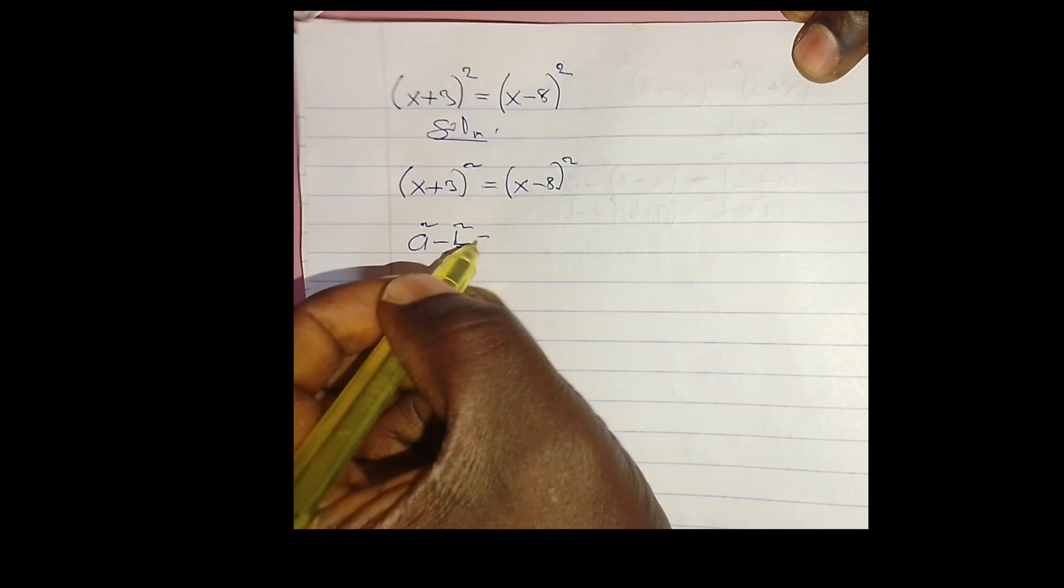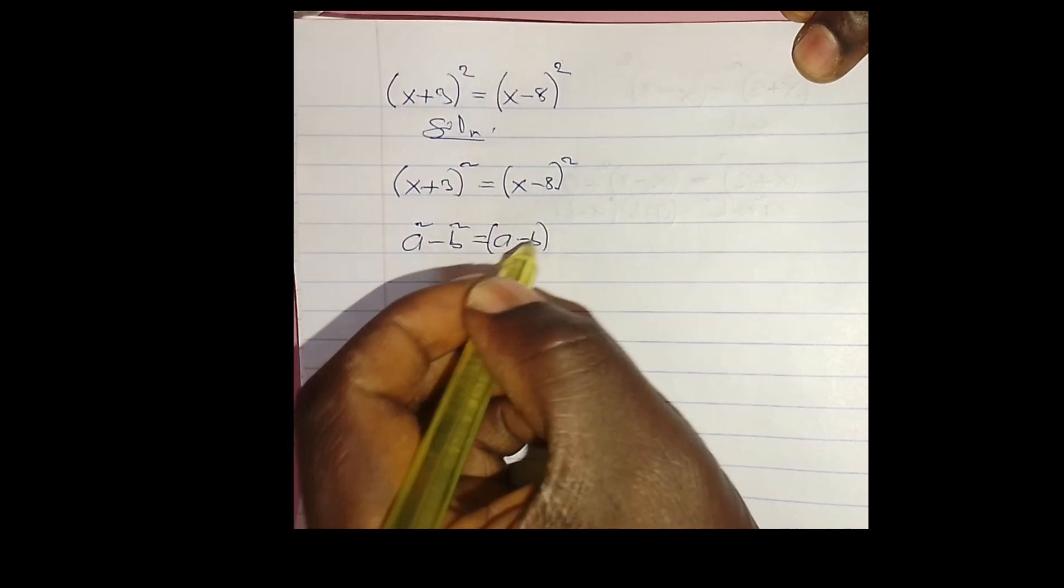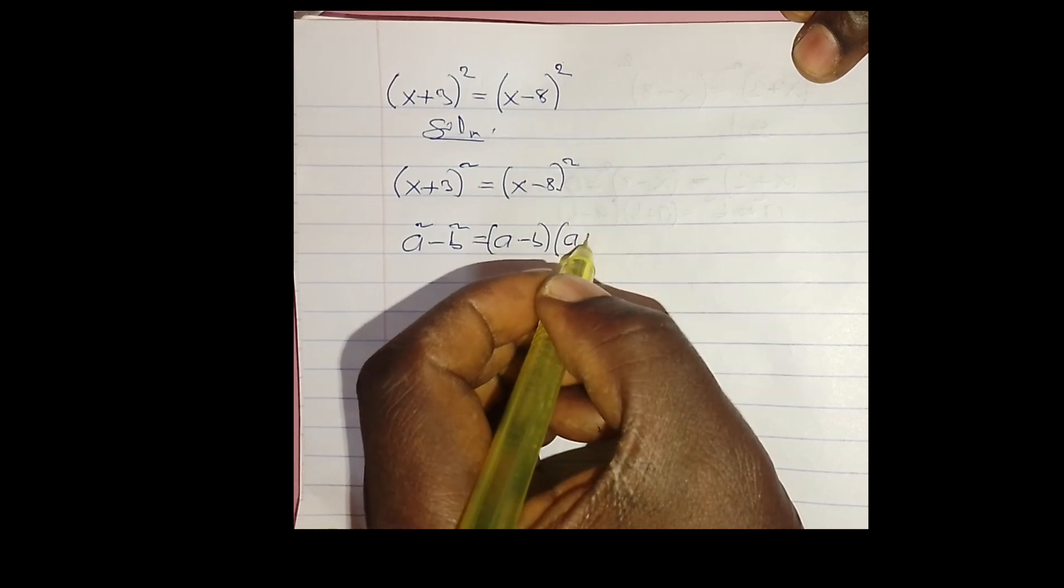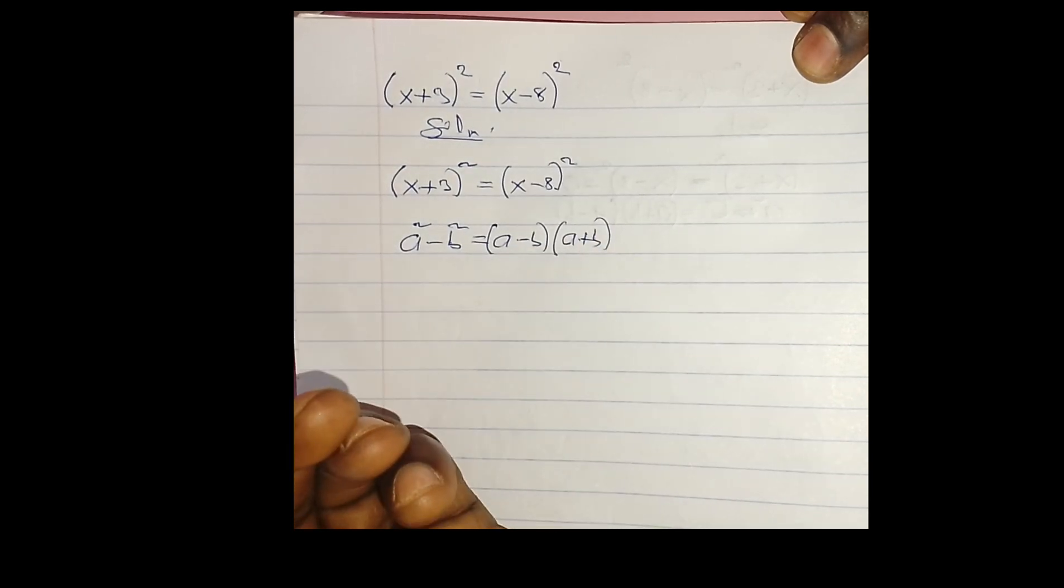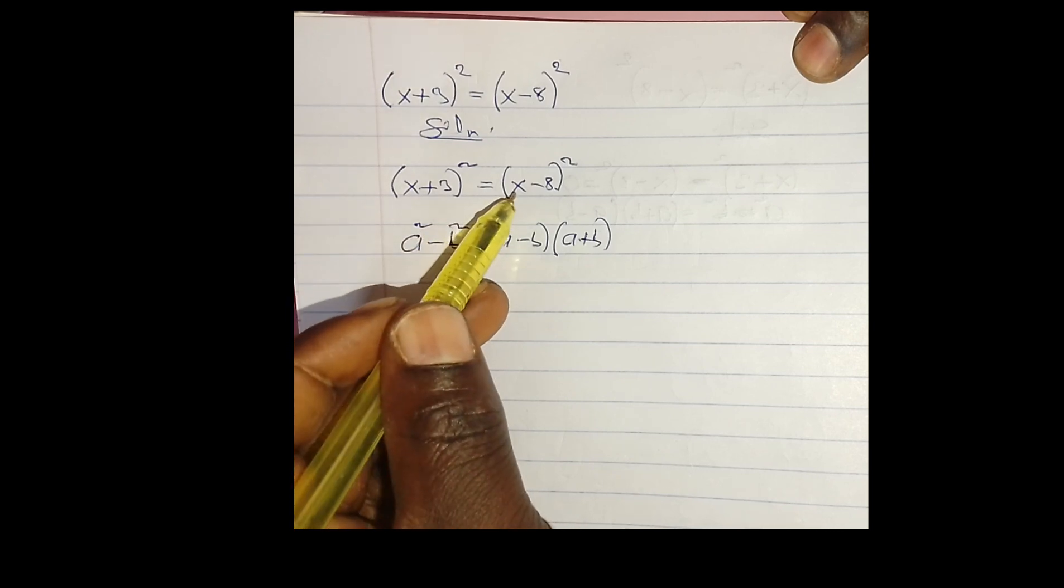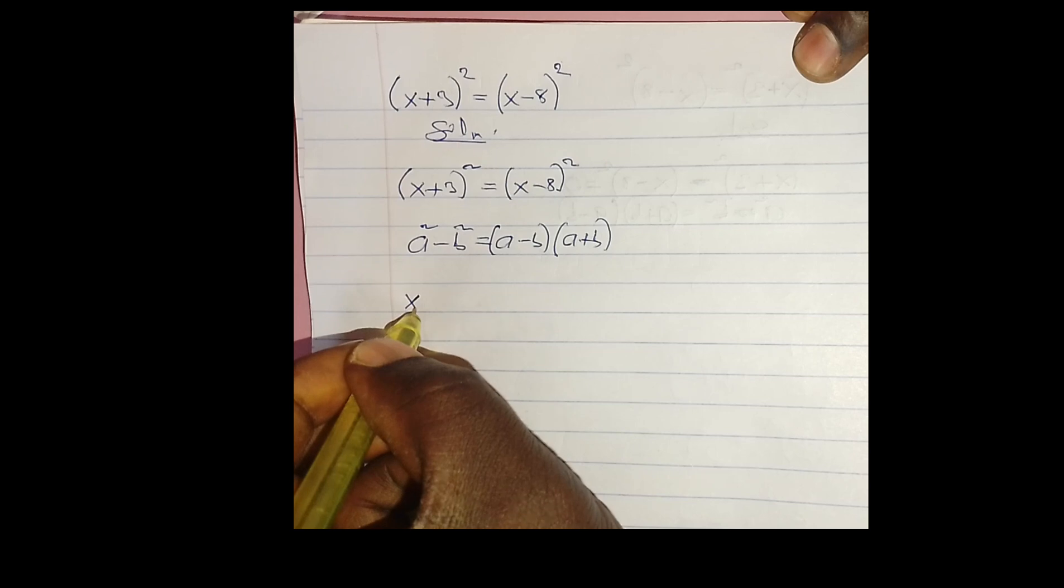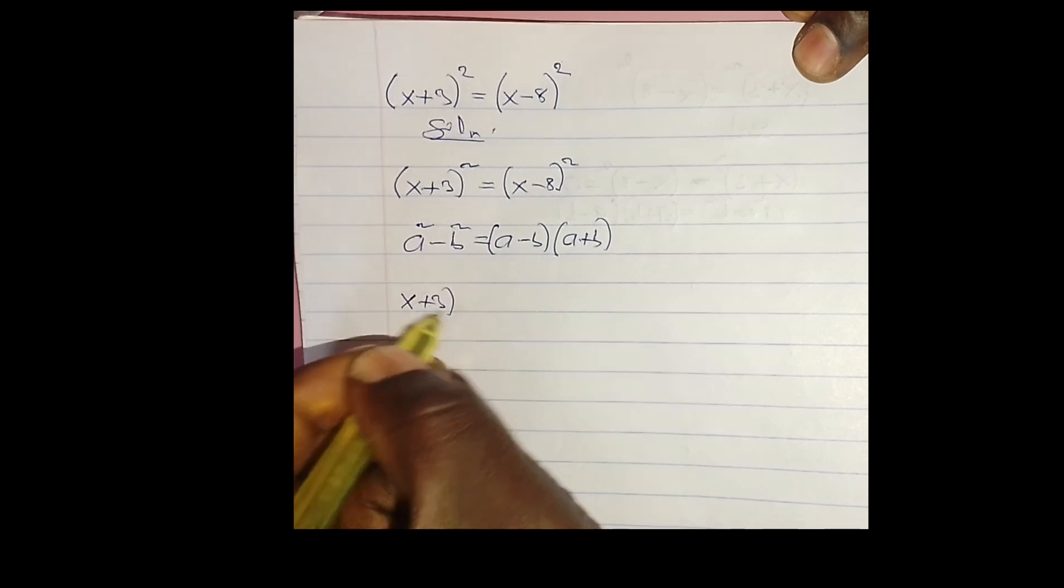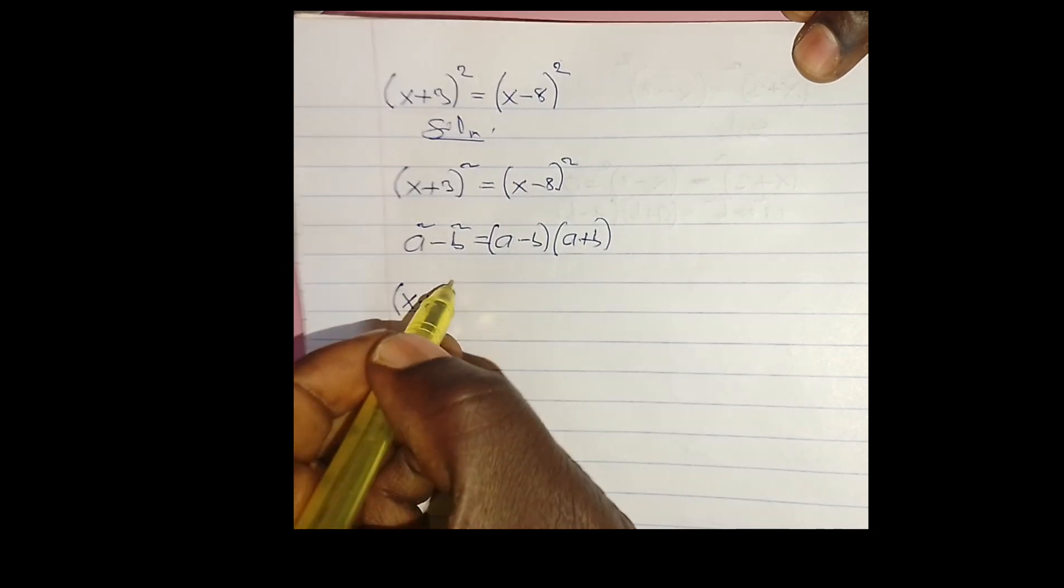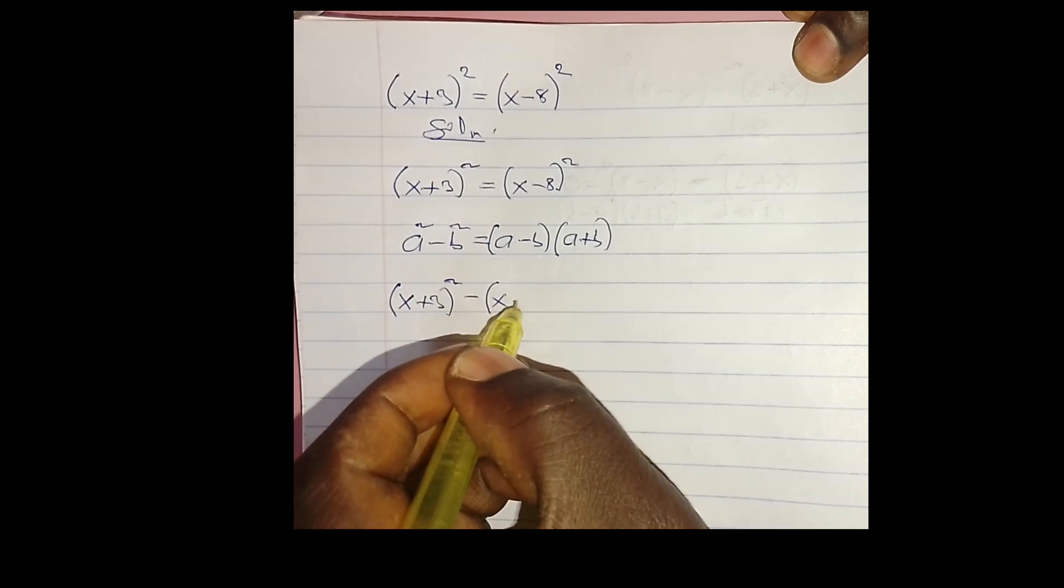So if that is the case, let me make everything equal to 0. That means (x + 3)² - (x - 8)² = 0.